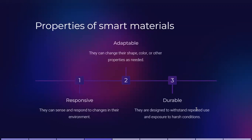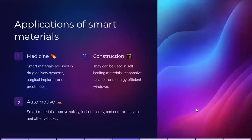The properties of smart materials are: responsive, adaptable, and durable. Responsive means they can sense and respond to changes in their environment. Adaptable means they can change their color or other properties as needed. Durable means they are designed to withstand repeated use and exposure to harsh conditions.